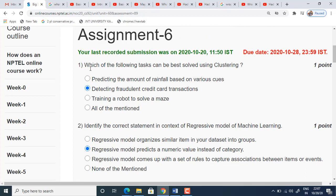The first question is, which of the following tasks can be best solved using clustering? We have given four options. The first option is predicting the amount of rainfall based on various cues. This comes under the regression part, predicting the amount. We are predicting a numerical value here, so it comes under regression model. Second one is detecting fraudulent credit card transactions. This can come under clustering, grouping the genuine transactions in one group and the fraudulent transactions in another group. It is called clustering. So this is the task which can be solved by using clustering.